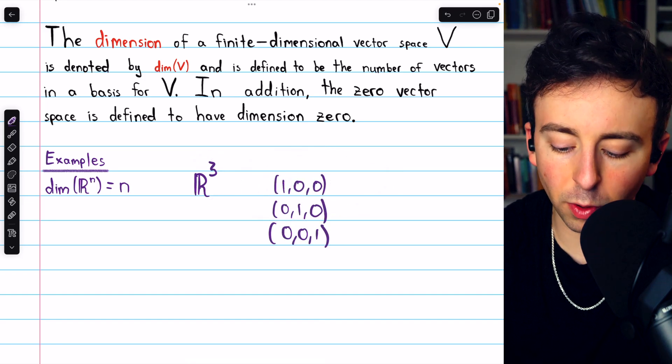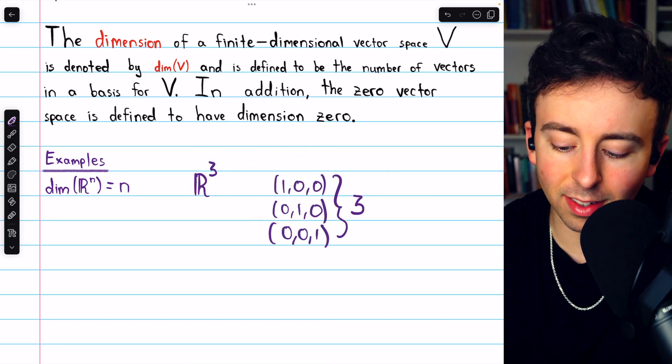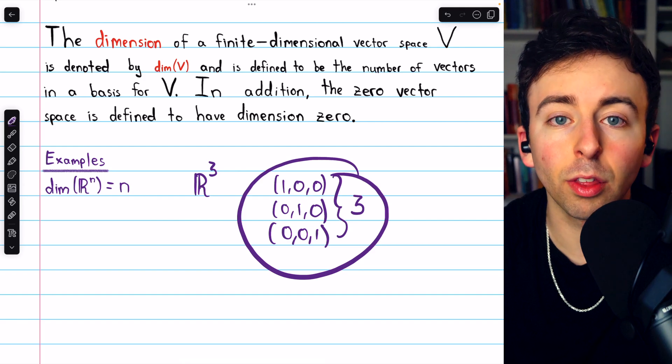The dimension of R³, of course, is 3, because its standard basis has these three vectors.